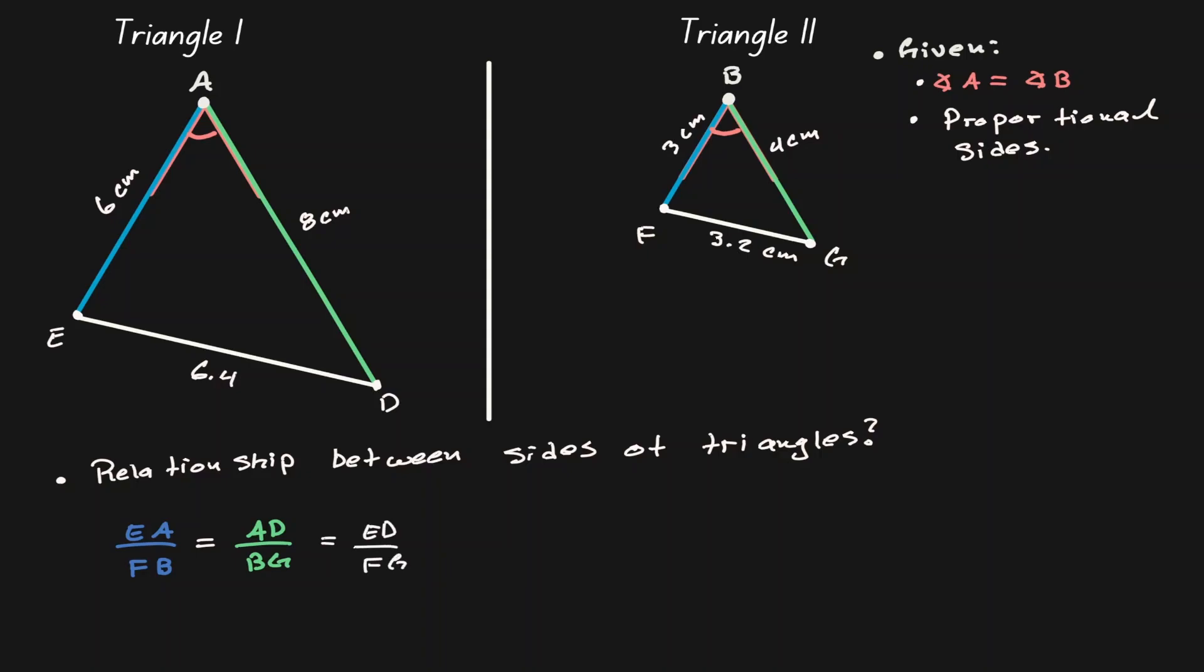Now let's plug in those values. Here we'll have 6 over 3, followed by 8 over 4, followed by 6.4 divided by 3.2. Notice that all proportions have the same value, that is the value of 2.